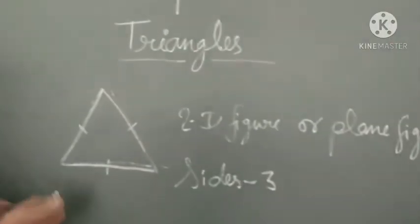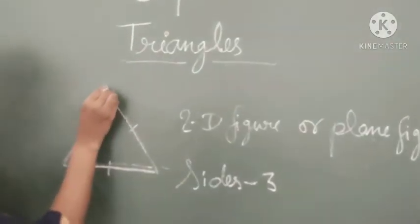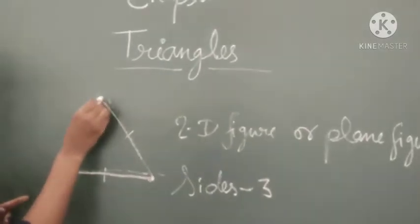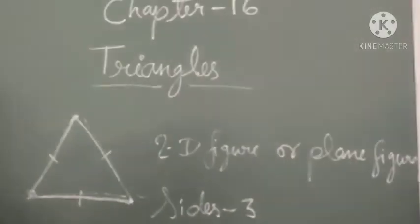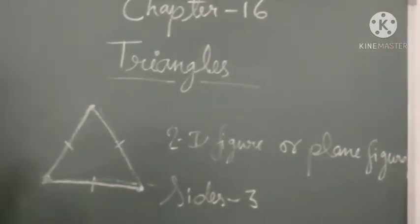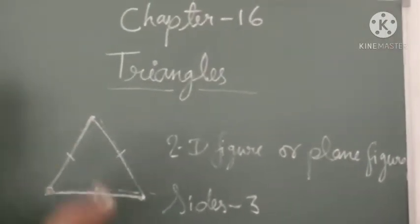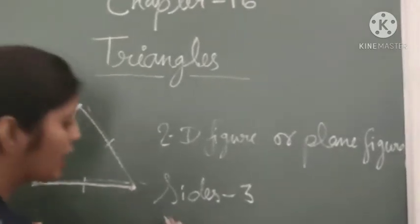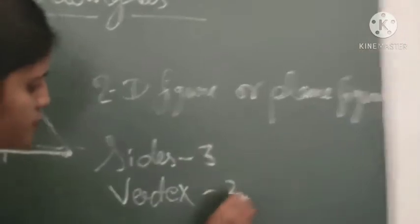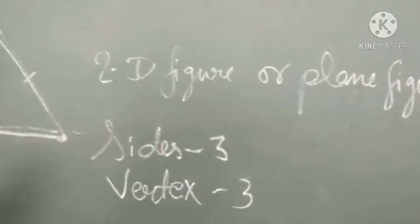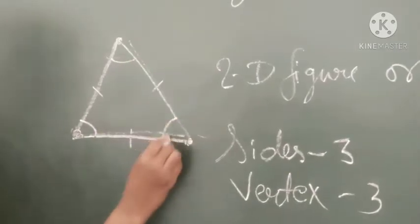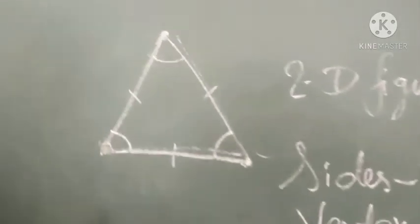A triangle also has 3 vertices, or 3 corners. You can call them vertices or corners. Since there are 3 vertices, we say 'vertices' — that is the plural of vertex. So: 3 vertices, 3 sides, and also 3 angles.